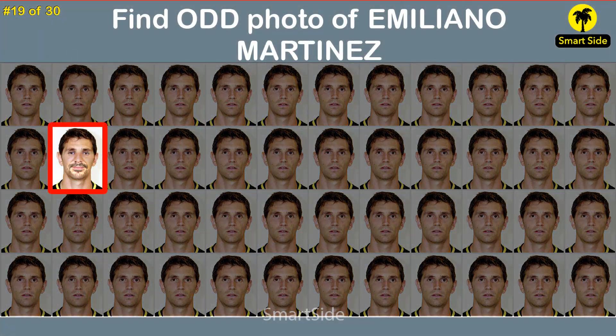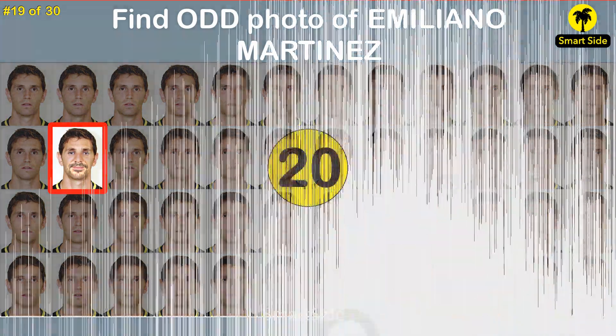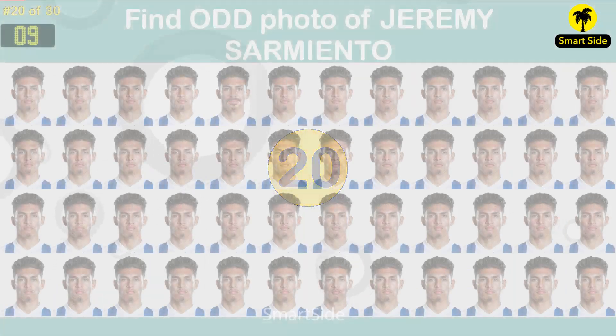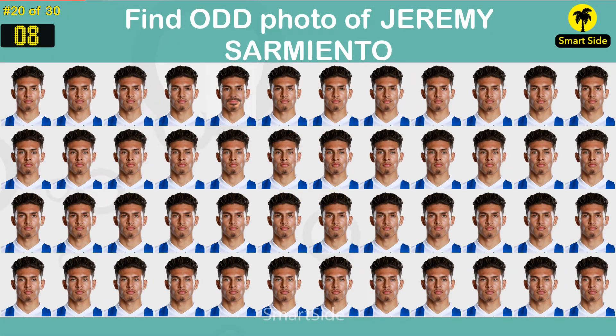The answer is this one. Question number twenty. Find the odd photo of Jeremy Sarmiento.